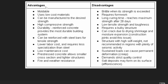Advantages of concrete: it is moldable, uses low-cost materials, can be manufactured to the desired strength, has high compressive strength and durability. Reinforced concrete provides the most durable building system. It can be reinforced with steel bars for tensile strength. Labor cost requires less specialization than steel. It has low maintenance cost. Pre-stressed concrete allows smaller cross-sections and lighter structures. It also has fire and weather resistance.